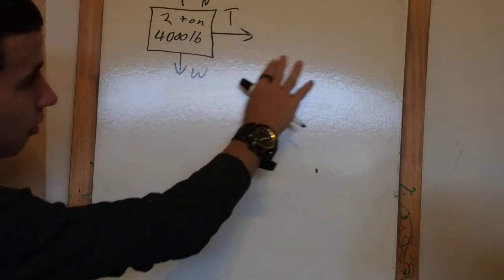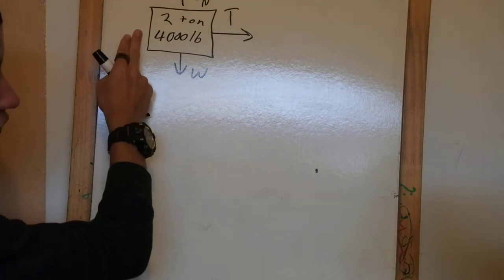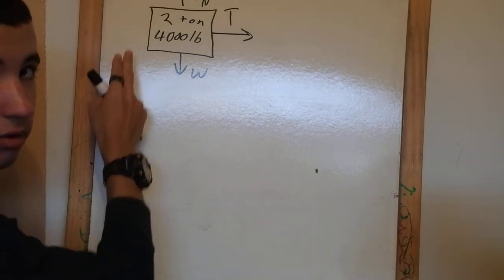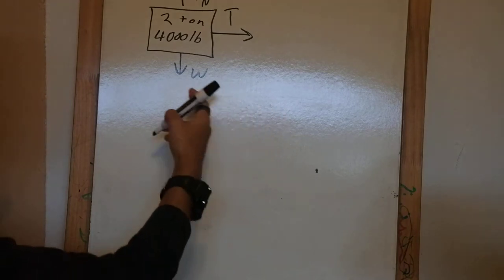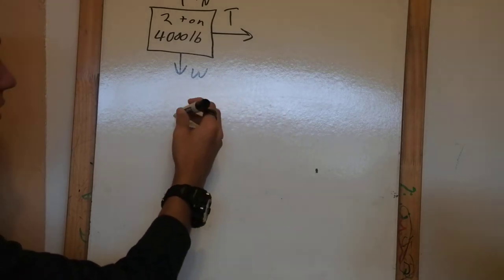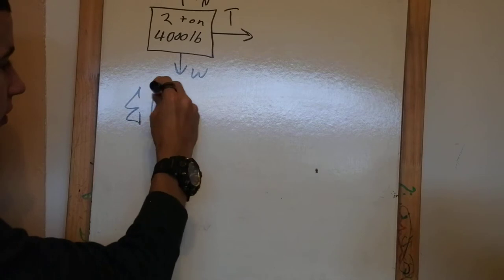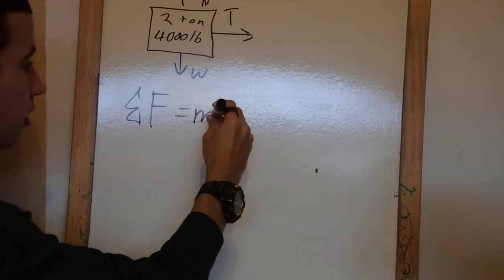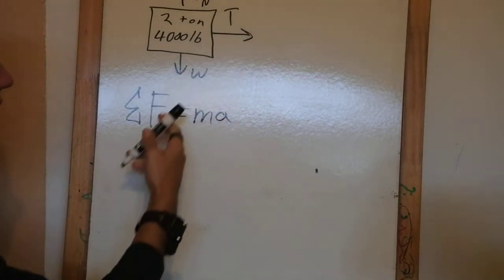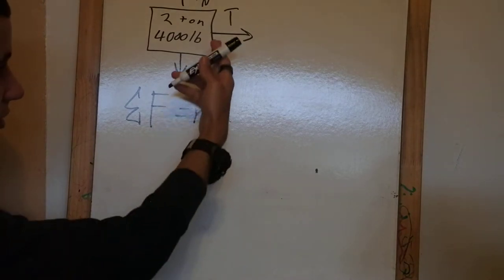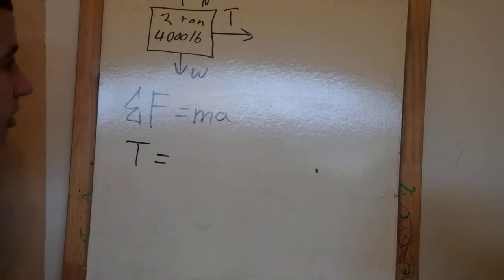It's only being pulled this way, so we look at this horizontal force. There would be friction resistance, but there's no friction, so we don't care about it. We consider the equation: sum of the forces equals mass times acceleration. All the forces we're looking at is just tension, so tension is going to equal the object's mass times acceleration.